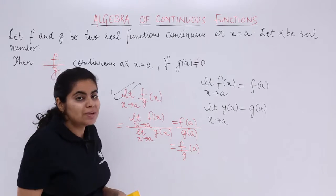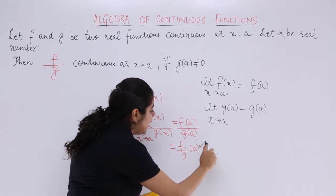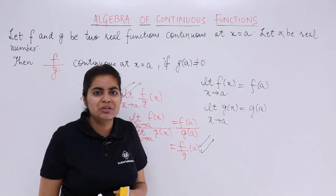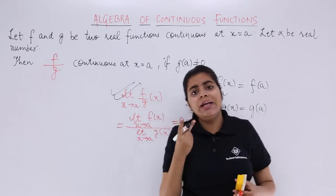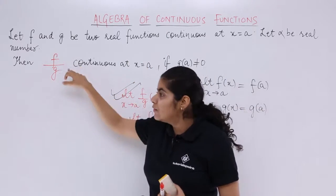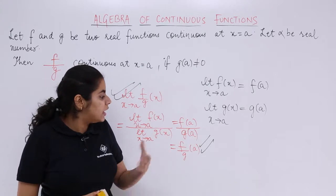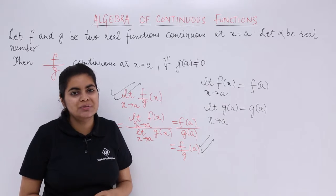We started with the concept of limits in case of the division or the quotient and we ended up at the value of the function, which happens in the case of continuous functions. So we say that when f and g are two individually continuous functions, their quotient is also continuous at x tends to a, provided the denominator g of a should not be equal to 0.